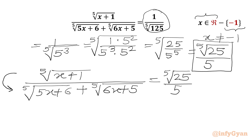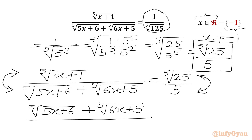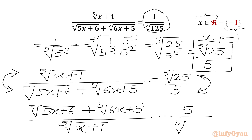Now, since x cannot equal negative 1, I can flip the numerator and denominator on both sides — that is, consider the reciprocal of both sides. So we write the LHS as the 5th root of (5x+6) plus the 5th root of (6x+5), all over the 5th root of (x+1). The RHS we write as 5 over the 5th root of 25.